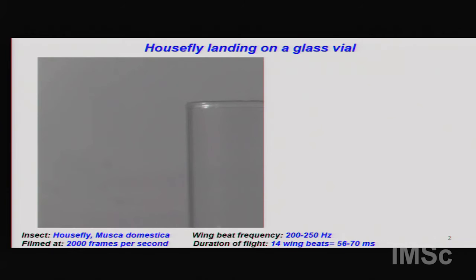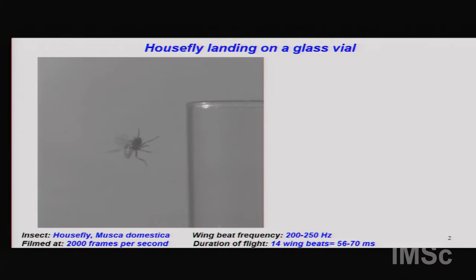All of the action you're going to see happens in a matter of 56 to 70 milliseconds — about half the time it takes for your eye to blink. The fly comes in, and you can see her front legs are up, which is what flies do when they're close to landing. She then slowly pitches up, slows down, and gently lands on the glass vial.